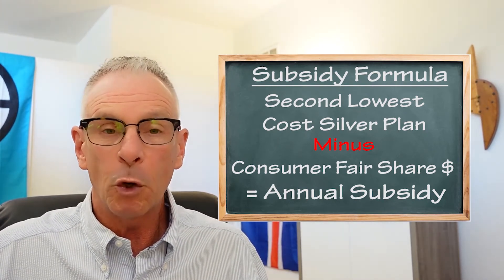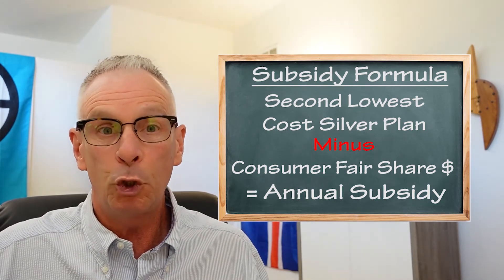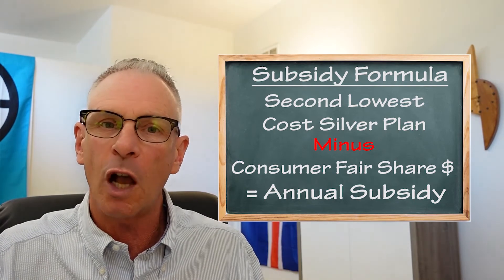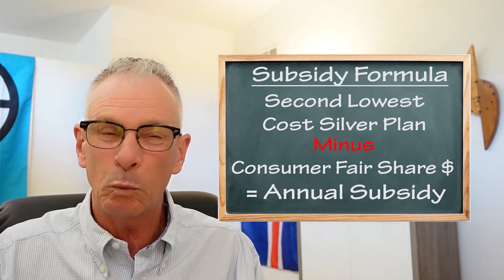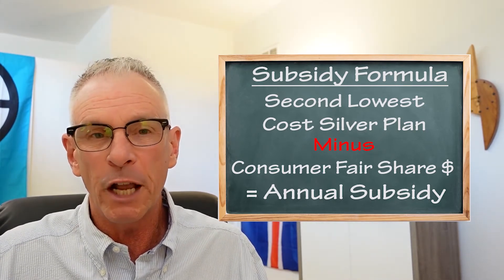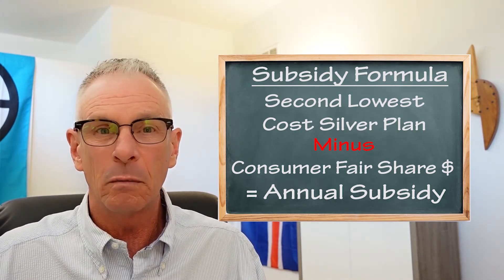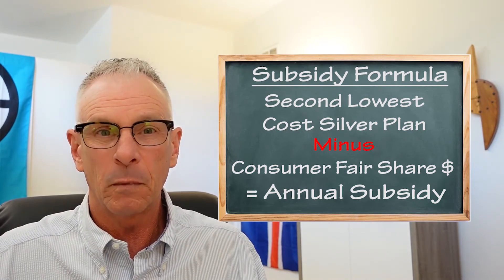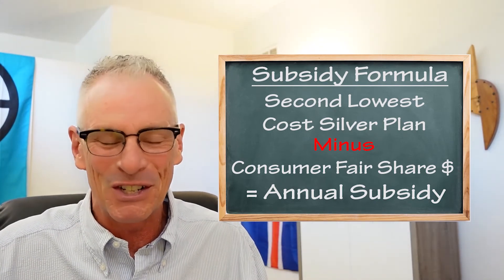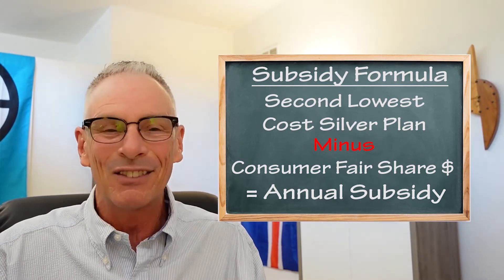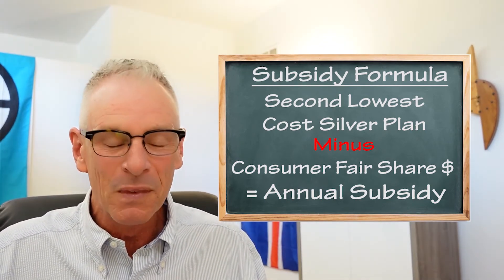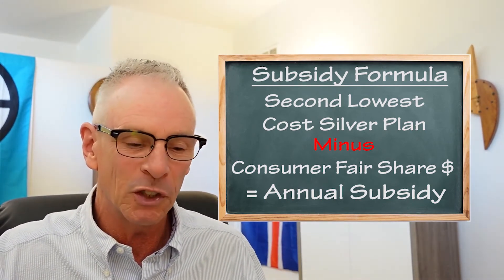You may be one zip code over from somewhere that has four or five carriers, but because you're one zip code over, maybe you only have two carriers, and that will change who is the second lowest cost silver plan. That's just really, really important. You can go to healthcare.gov or Covered California, put in your zip code, and you can find the full monthly amount for the second lowest cost silver plan if you wanted to crunch these numbers yourself. All of these numbers also show up on the 1095-A that you get from the exchange.